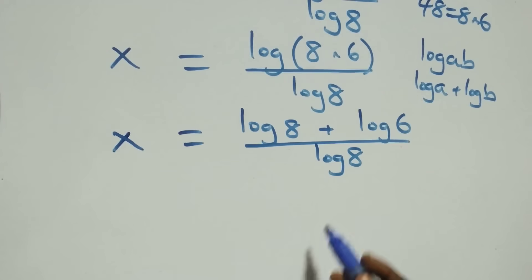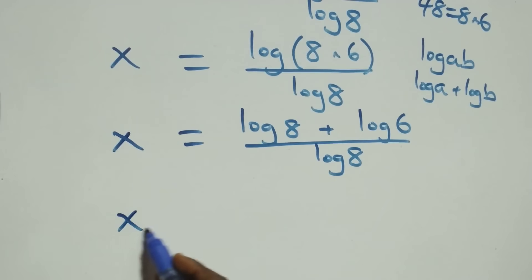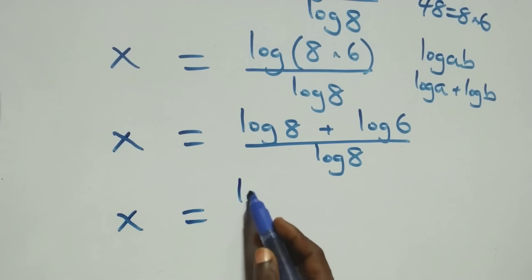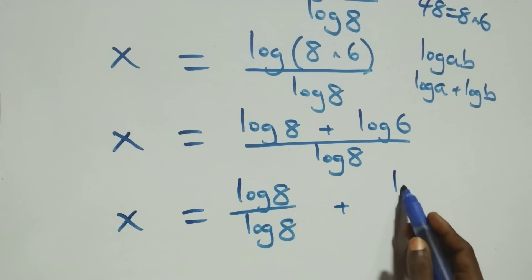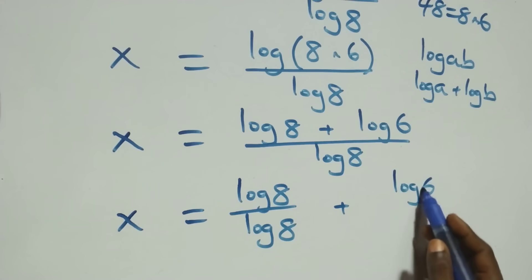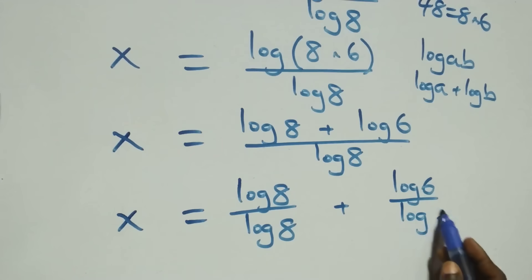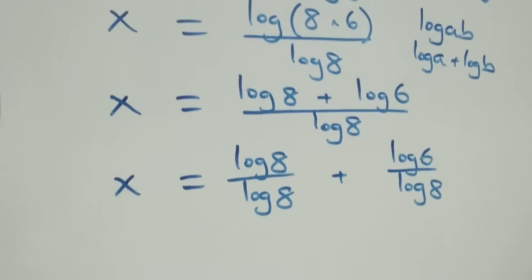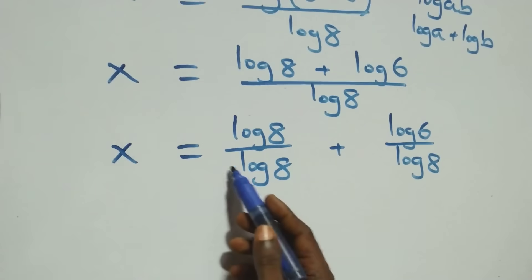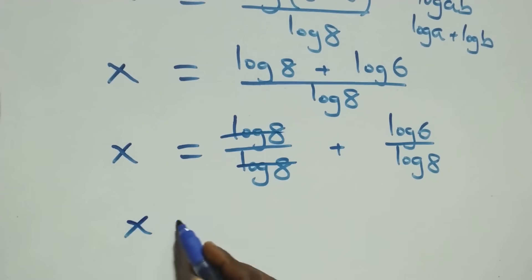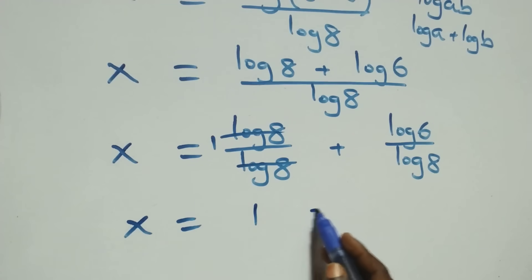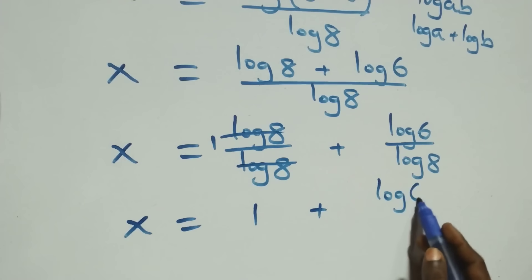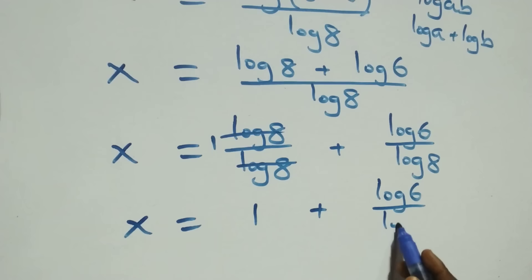We have x equals to log 8 over log 8 plus log 6 over log 8. Log 8 cancels each other, and we have x equals to 1 left here. That is 1 plus log 6 over log 8.